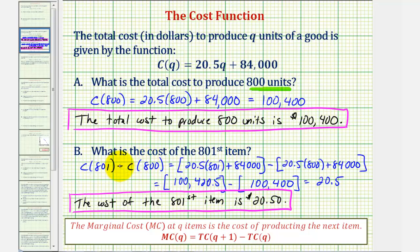What we'll find is that we often approximate the marginal cost by evaluating the derivative of the total cost function at Q equals 800.